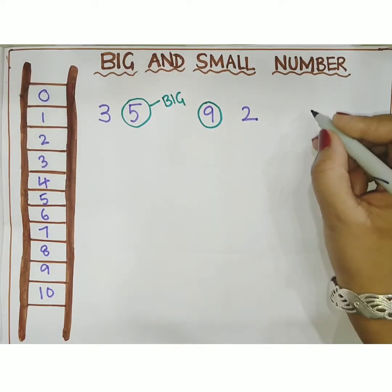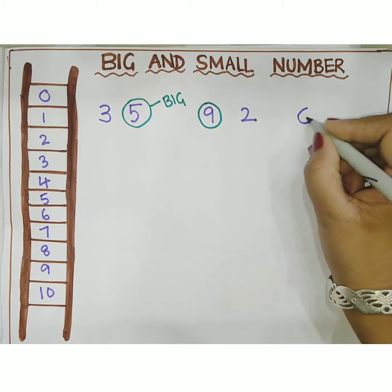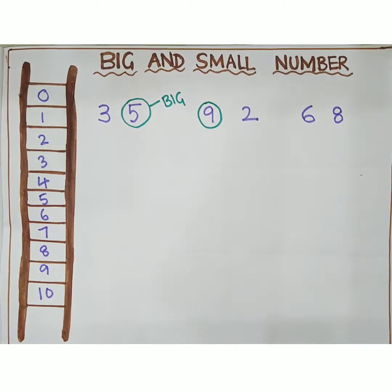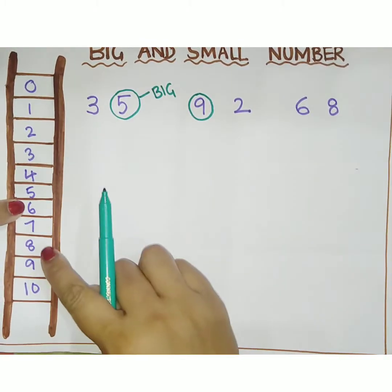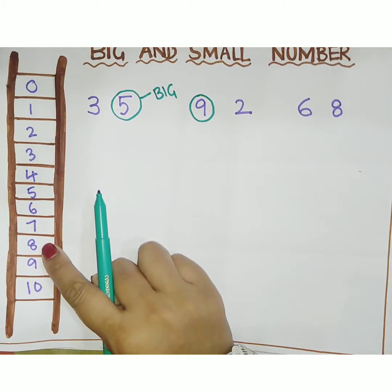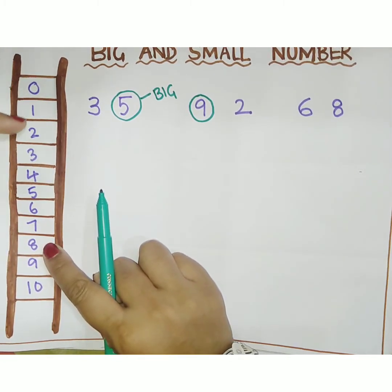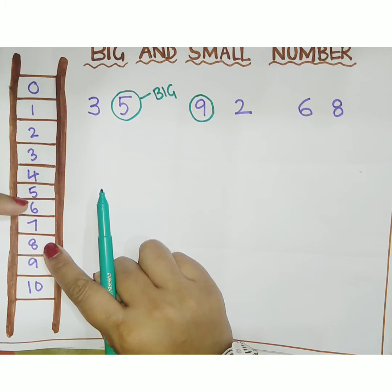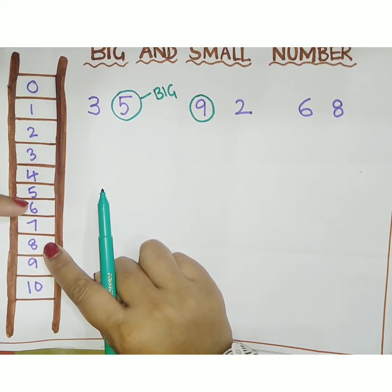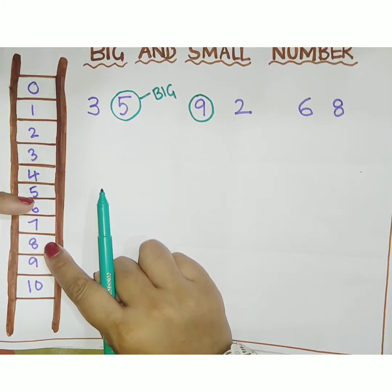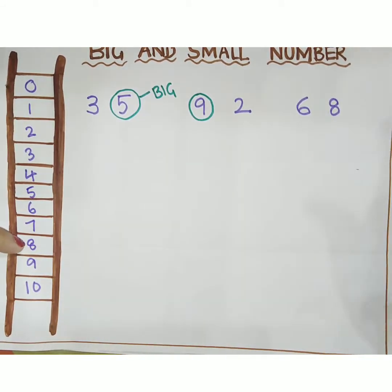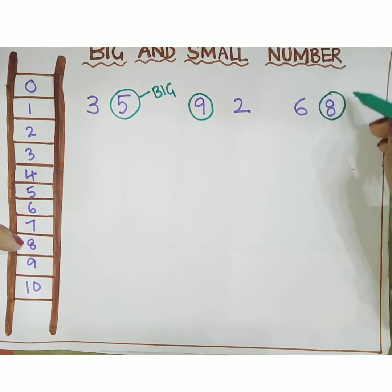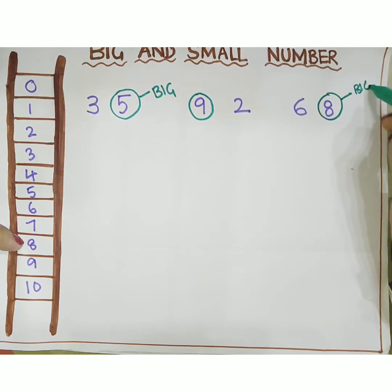Let me take one more example: 6 and 8. In this, 6 is here and 8 is here. Move forward from 0 — which number comes first? 6 comes first, so 6 is the small number and 8 comes later, so it is the big number.